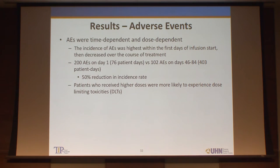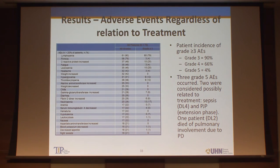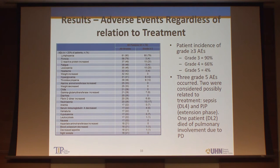AEs were typically seen within the first days of infusion start and then decreased over the course of therapy. Beyond about day 50, you see a 50% reduction in incidence — once you get through that early period with disease under control, it appears easier. Higher doses were more likely to be associated with DLTs. Grade three or four AEs were fairly significant. Three grade five AEs were identified: sepsis, a case of Pneumocystis pneumonia, and one patient who died of pulmonary involvement from progressive disease. Overall toxicity was really no different than what was identified in the ALL studies.